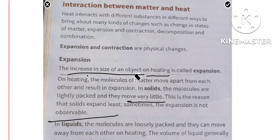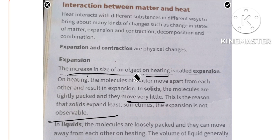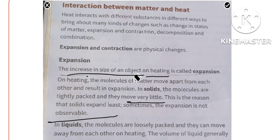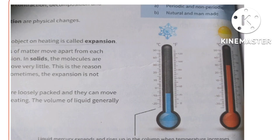In liquids, the molecules are loosely packed and they can move away from each other on heating. The volume of liquid generally increases on heating. For example, liquid mercury expands and rises up in the column when temperature increases.